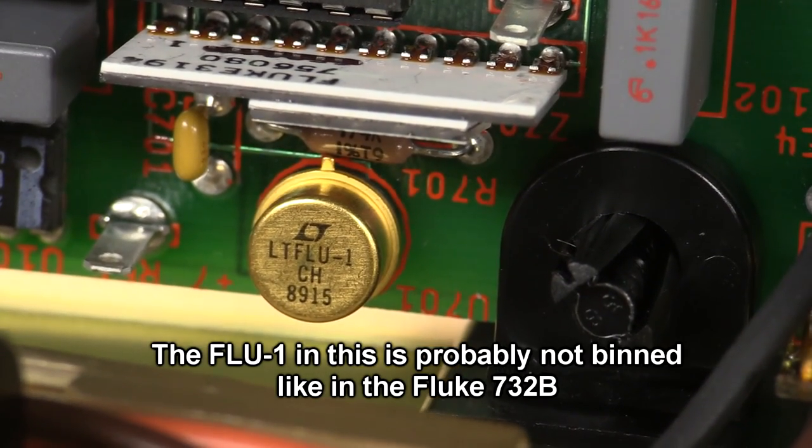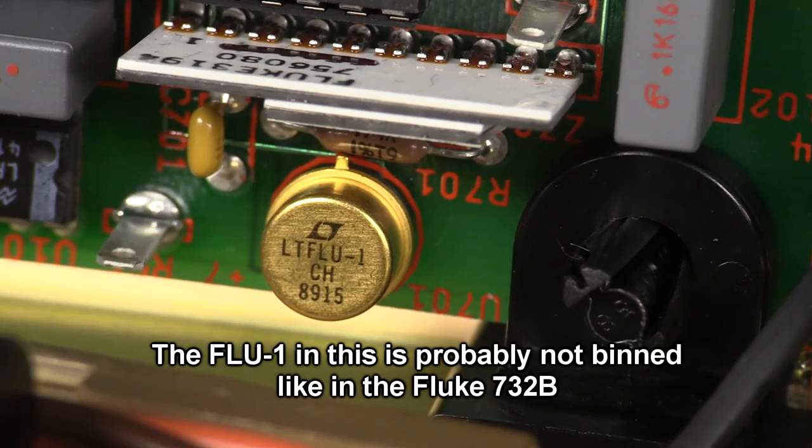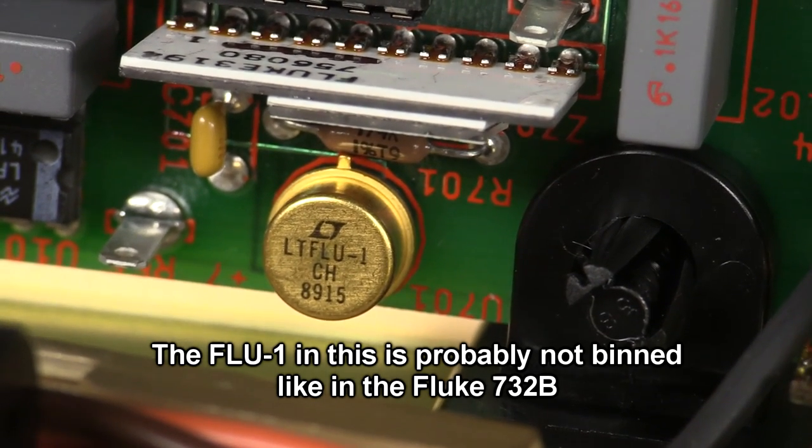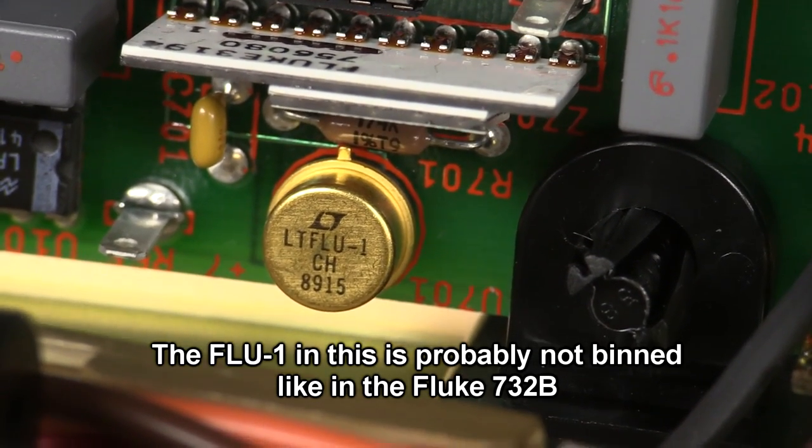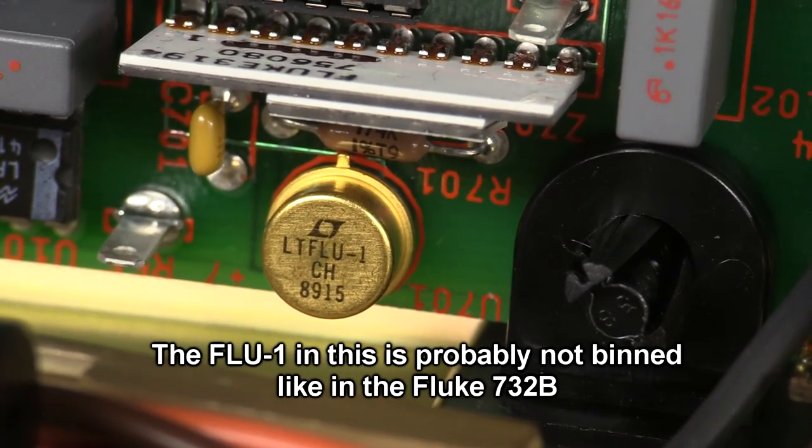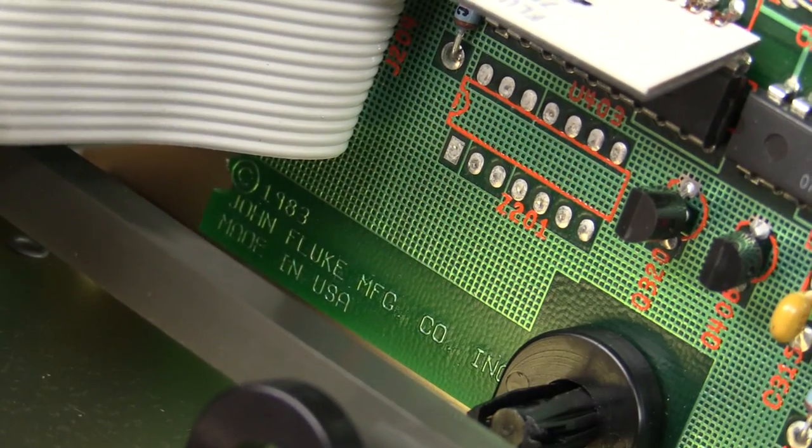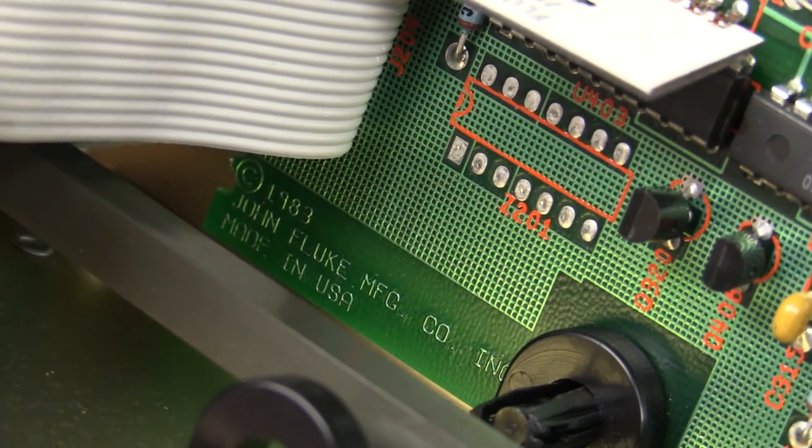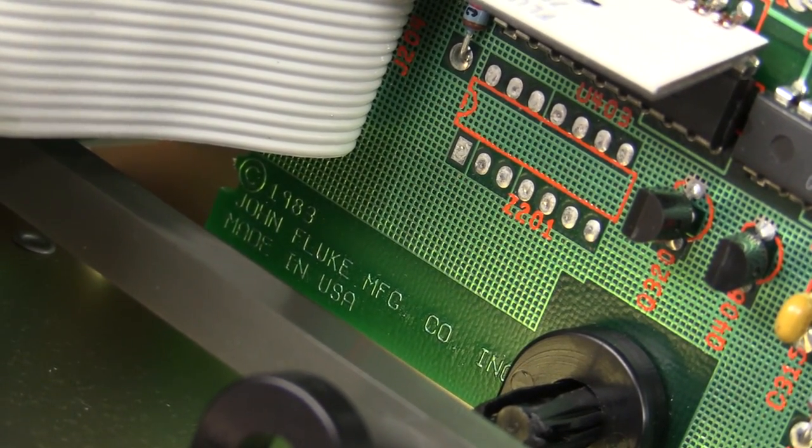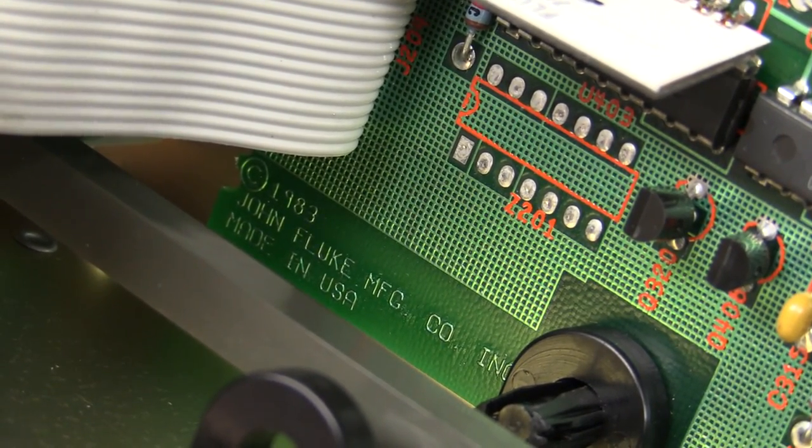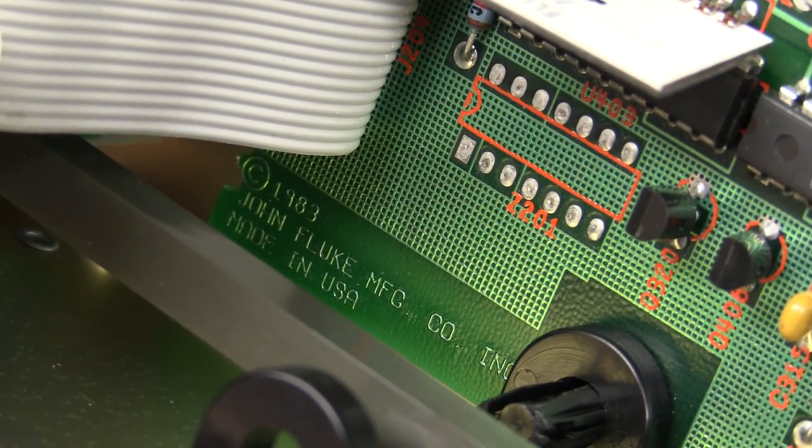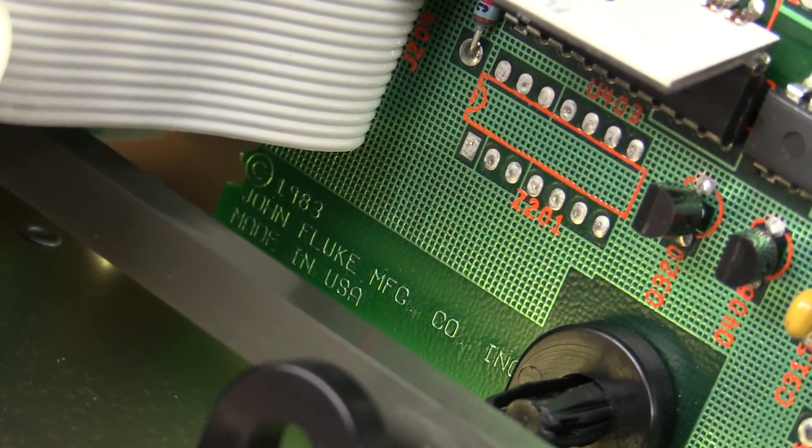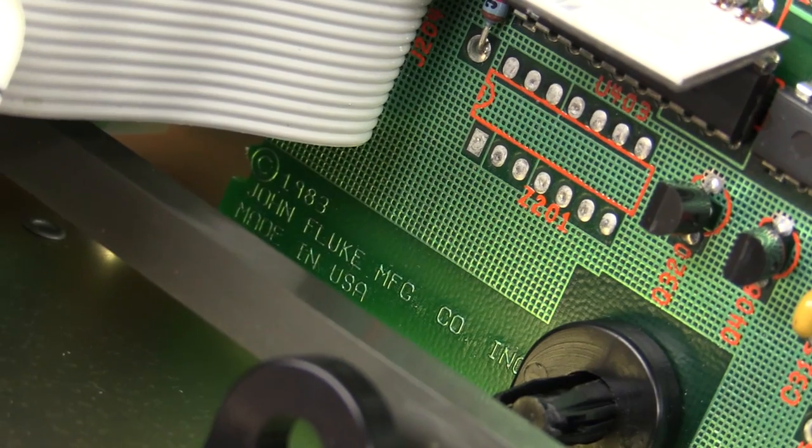So that is massive overkill for a five and a half digit meter. It'd be overkill for a six and a half digit multimeter, which would use the classic LM399 for example, which is not as good as this. This is like almost a transfer standard class reference. And they've got it in this five and a half digit meter. So if you buy one of these, I paid 60 bucks for this, broken in quote marks. You know, sold as not working. And some people would say it's worth it just for the reference alone.